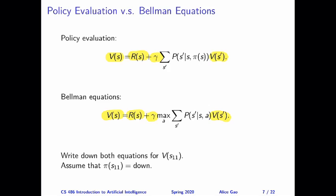So what is the main difference between the two? For policy evaluation, we are restricted to one particular policy. Because we're given the policy, it specifies what action we should take in each state. That is why we have π(s) here, which is the action specified by the policy for this particular state. Given the action specified by the policy, we do not have to consider other actions. That is why in the policy evaluation step you do not see a maximum over all possible actions, whereas in the Bellman equations you do see this maximum across all possible actions, because we don't know which action is the best.